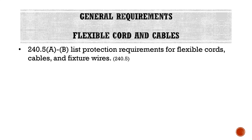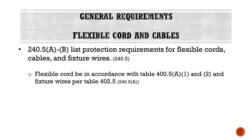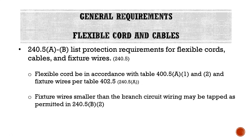Moving on to flexible cords and cables: Section 240.5 A through B lists protection requirements for flexible cords, cables, and fixture wires. Flexible cord must be in accordance with Table 400.5 A1 and A2, and fixture wires per Table 402.5. Fixture wires smaller than the branch circuit wiring may be tapped as permitted in 240.5 B2. This refers to the fact that most fixtures you buy have wiring built in that is a much smaller wire size than the branch circuit conductors — and 240.5 B2 specifically permits that if it's in accordance with the rule.